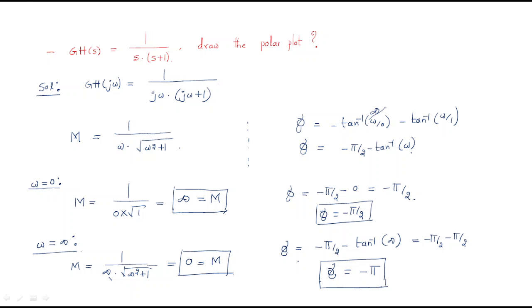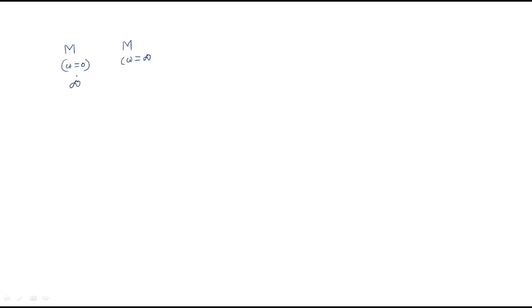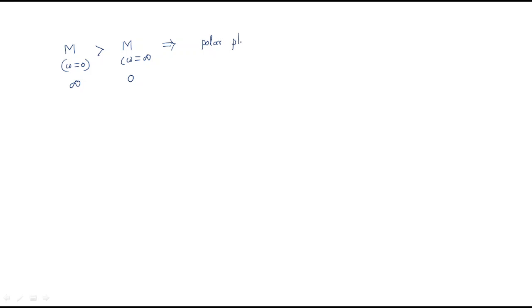Now check whether the polar plot is valid. Compare magnitude at ω = 0 with magnitude at ω = ∞. Magnitude at ω = 0 is infinite, and magnitude at ω = ∞ is 0. Since these are different, the polar plot is valid.